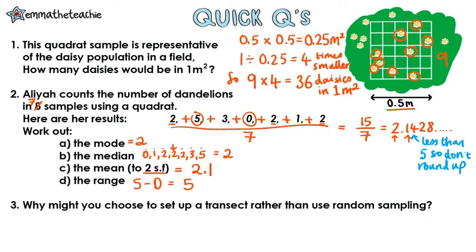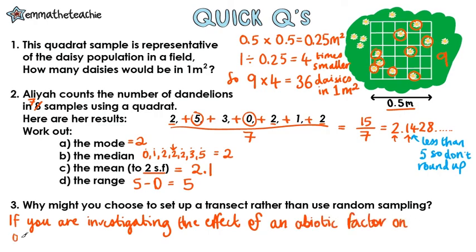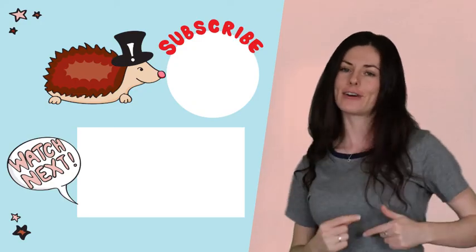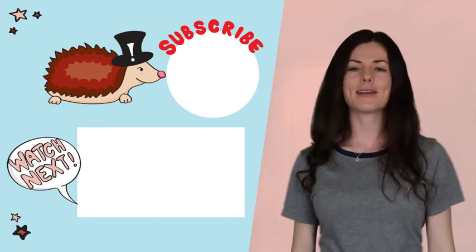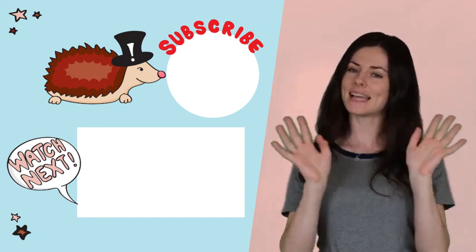Why might you choose to set up a transect rather than using random sampling? If you're investigating the effect of an abiotic factor on organism abundance or distribution. How did you do? Next up, we're looking at the cycling of water and nutrients, and please subscribe if you find this useful. Thanks and bye!